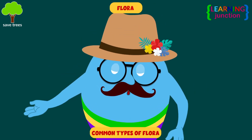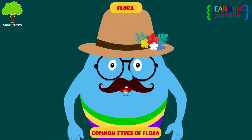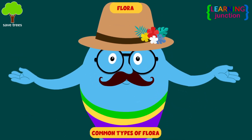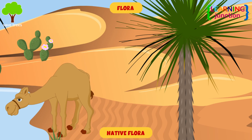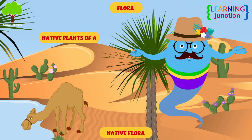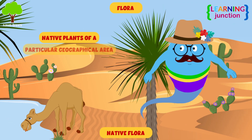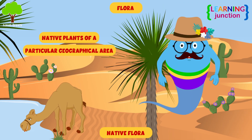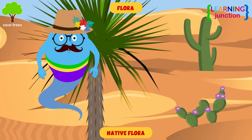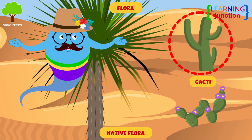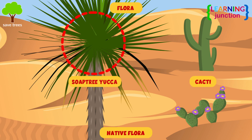Some common types of flora are as follows. Native flora: it refers to the native plants in a particular geographical area. For example, cacti and soaptree yucca in the desert.